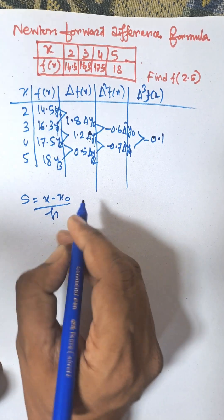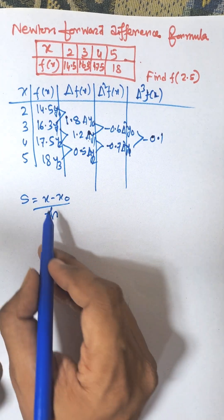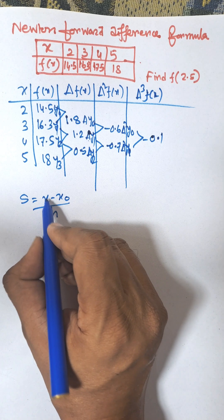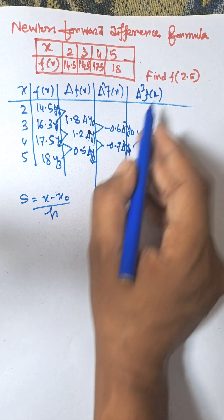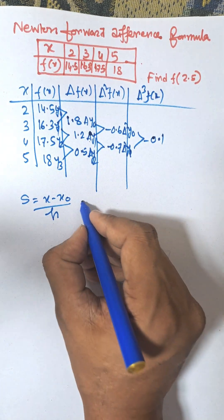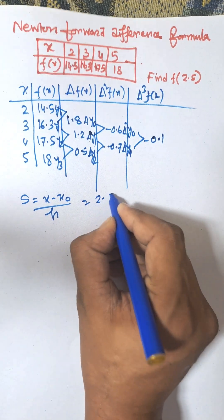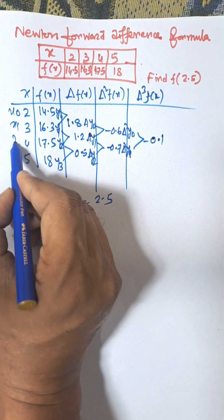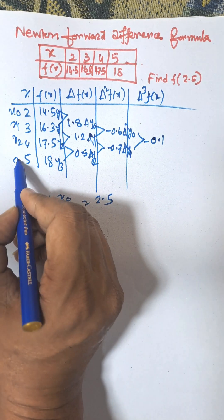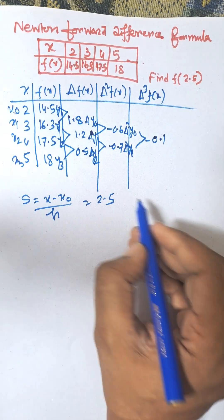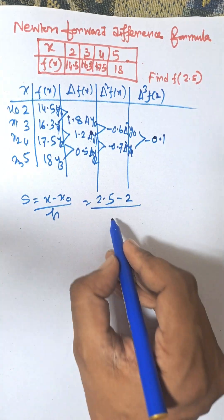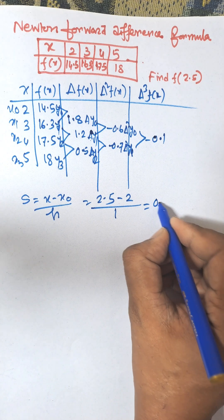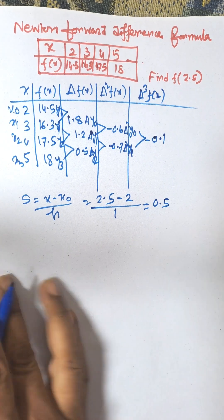We need to find the formula: s equals x minus x₀ divided by h. x is the value to be found out, that is 2.5. x₀ is the initial value, which is x₀ = 2, and h is the difference between consecutive x values, which is 1. So s equals 0.5.